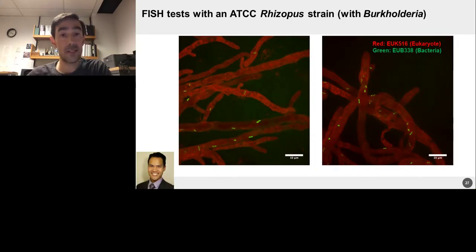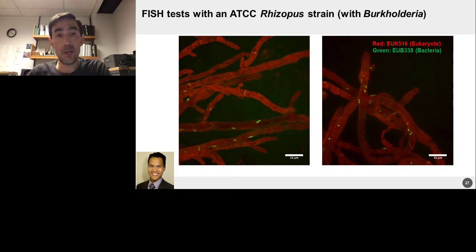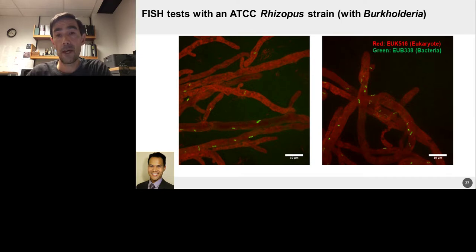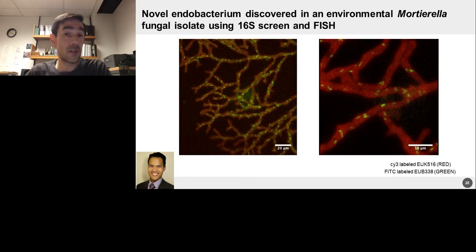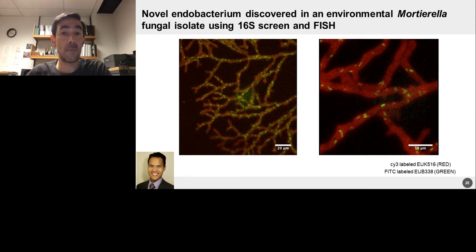We wanted to prove that these 16S signals are real. So we've performed a number of different microscopy tests. This is a FISH — fluorescence in situ hybridization — stain using a universal 16S probe against Rhizopus, one that we obtained from the ATCC culture collection. This is a Burkholeria that's known to be associated with Rhizopus, and we see it quite clearly. We've also screened our unique collections of fungi and found similarly that some of them have mild to very high burden of what appear to be bacteria inside the fungal hyphae.